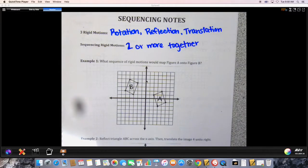So if you do more than one rotation, more than one reflection, more than one translation, or a combination of them, that's called a sequence of rigid motions. Now you can - we are only going to do two. You can do up to 10, but for our purposes we're only going to do two.